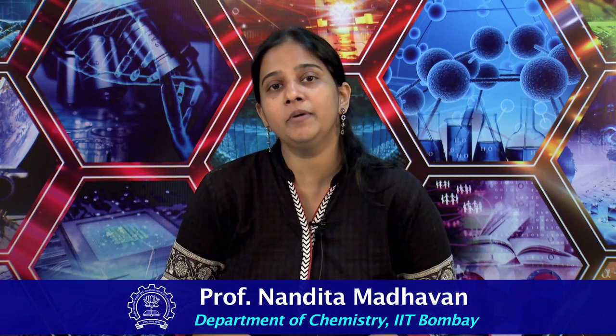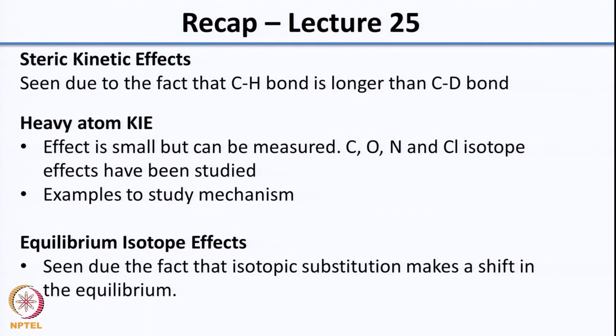Welcome back. In the last class we had looked at steric kinetic effects, which were seen because the C-H bond is longer than the C-D bond. We had also looked at heavy atom kinetic isotope effects, and those effects are very small because the reduced mass difference when you substitute with the heavier isotope is very little compared to substitution of hydrogen with deuterium. To study this, simple tricks have been used such that you measure the concentration of the reactant and measure the enrichment of the heavier isotope closer to the end of the reactant. Using these techniques you can measure very small kinetic isotope effects, and we had looked at examples where these have been used to study the mechanism for reaction.